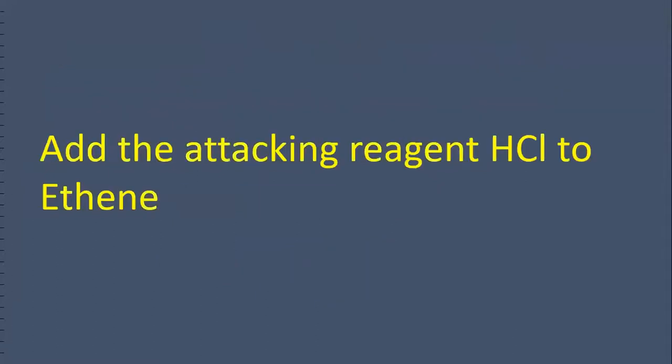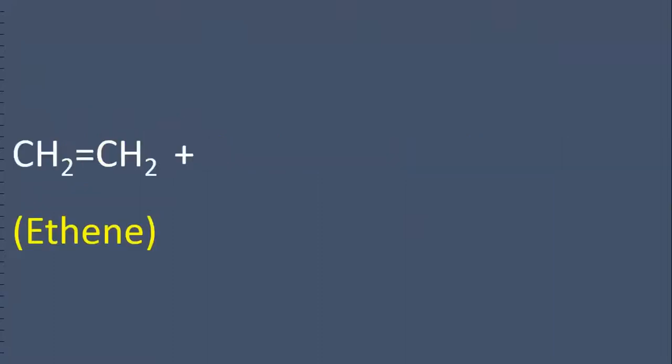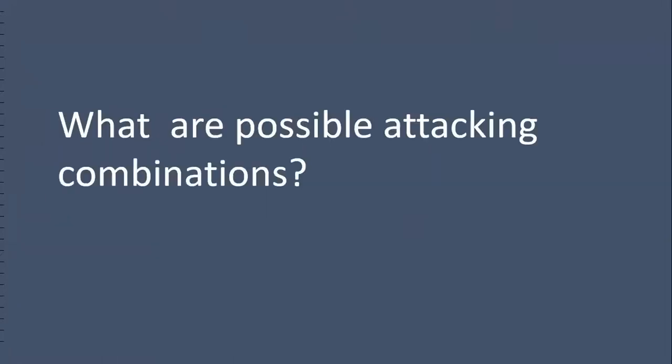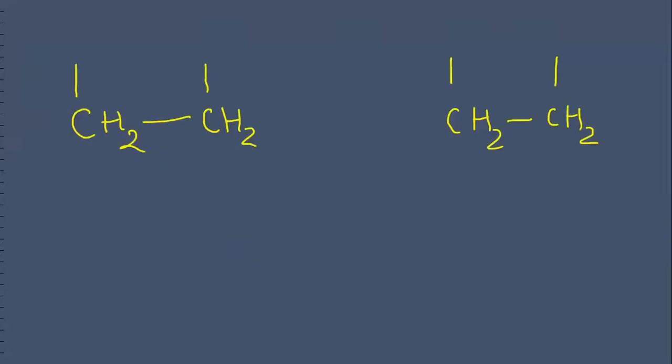Add the attacking reagent HCl to ethene. You see ethene, you see HCl. What is the product? What are the possible attacking combinations? There are two carbon atoms. See the first combination and second combination. In the first case, hydrogen and chlorine are joined.